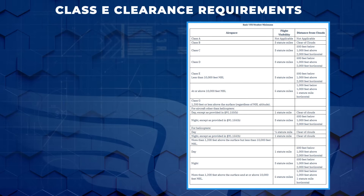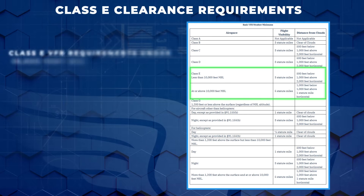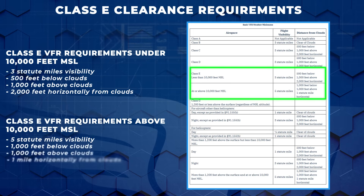Before you fly in Class Echo airspace, make sure you're aware of all the minimum weather requirements. VFR pilots must maintain three statute miles visibility and at least 500 feet below the clouds, 1,000 feet above the clouds, and 2,000 feet horizontally when flying under 10,000 feet MSL. Remember these are just minimums — and honestly, three statute miles is not a lot. Many pilots should increase their own personal minimums to ultimately be comfortable and safe.